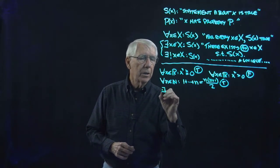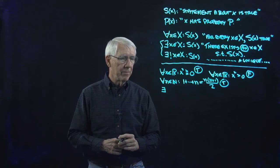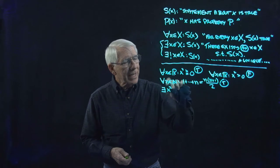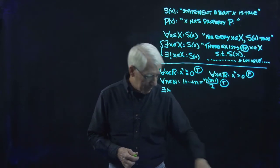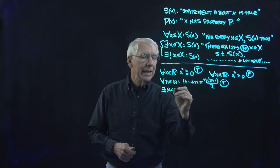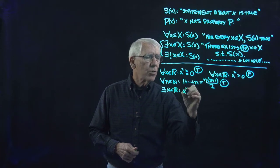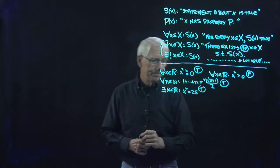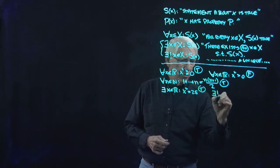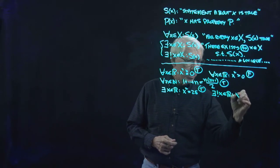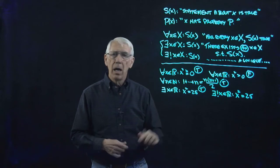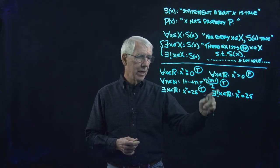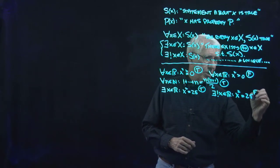Let's look at an existence statement. There exists an X in ℝ such that X squared equals 25. Of course, that's true. Now let's look at the statement: there exists a unique X in ℝ such that X squared equals 25. That's false, because 5 squared is 25 and (−5) squared is 25, so it's not true that there's a unique X here that does this.